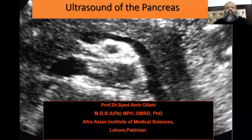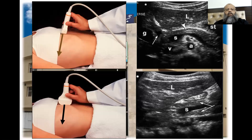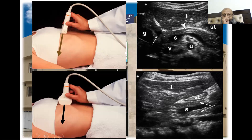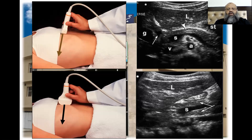The topic of our discussion is ultrasound of the pancreas. First is the posture of the patient — we can scan the patient while lying on a couch or patient bed. We start scanning transversely, putting the transducer transversely with the head towards the right arm of the patient.